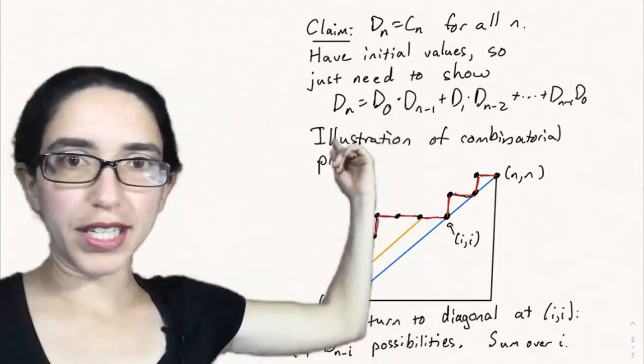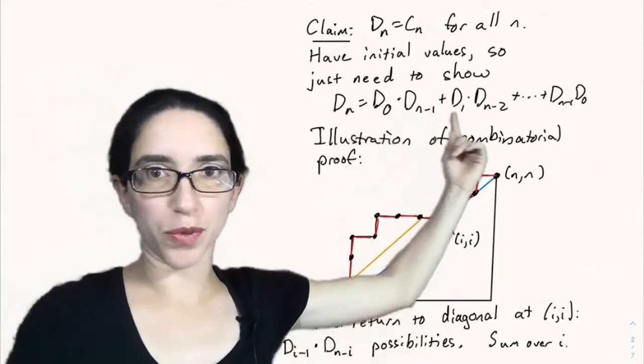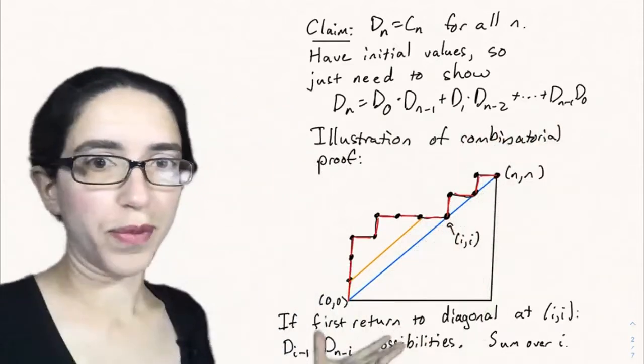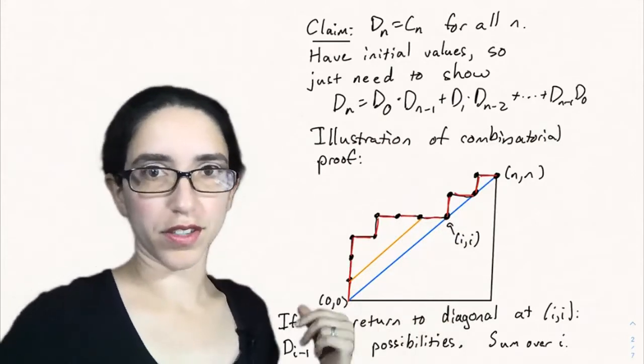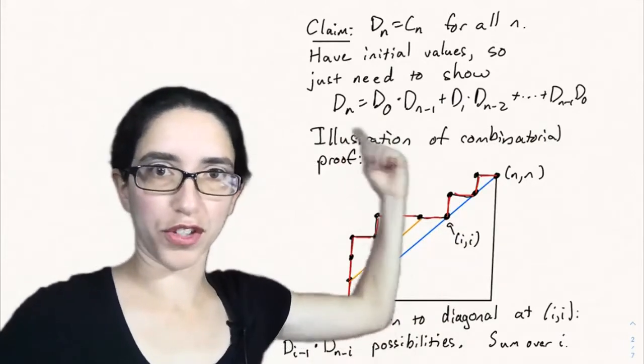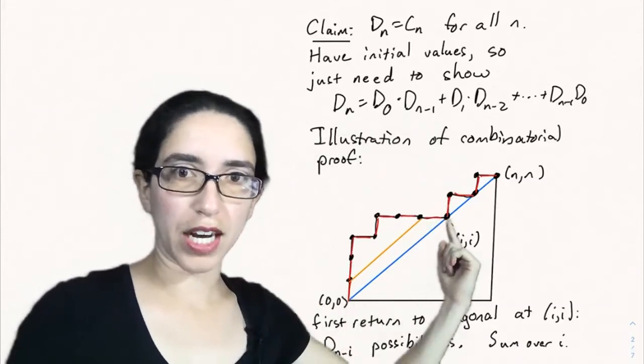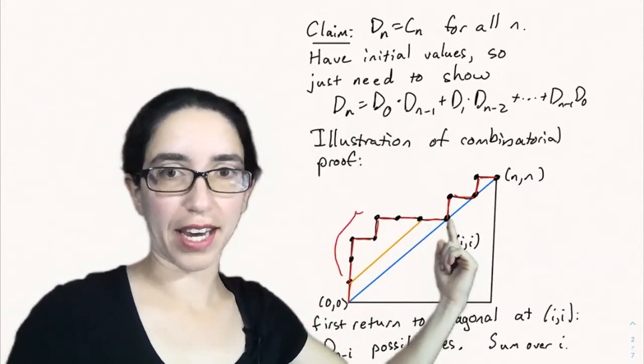So we need to show that D sub n is D0 times Dn minus 1 plus D1 times Dn minus 2 down to Dn minus 1 times D0. Let's consider the following picture to understand why this is. We're going to sort of count in two ways. To count the Dyck paths of height n, consider the first time that the path returns to the diagonal.